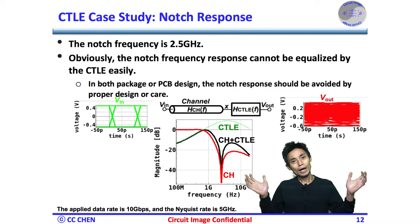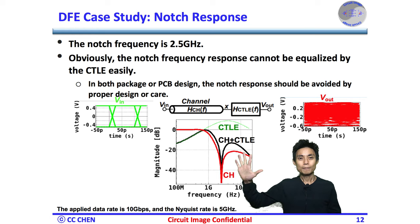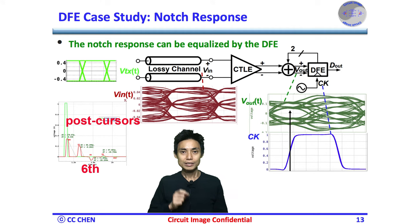If the CTOE cannot equalize the bumpy response, can we get help from the DFE? Think about your own image for 5 seconds. Yes, according to the single-shot response, if the 3rd, 6th, 9th, 12th post-cursors can be removed, then the DFE can equalize the channel well.